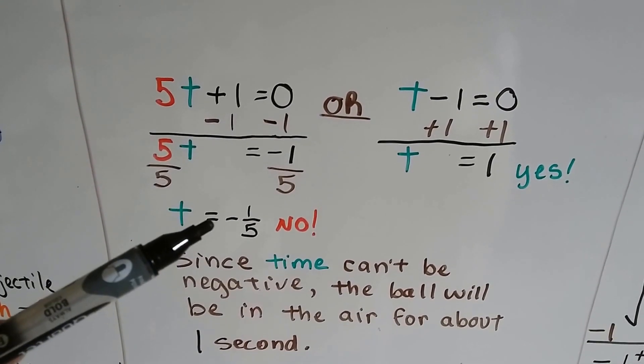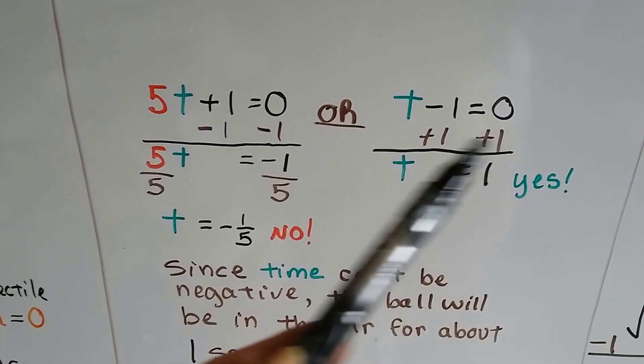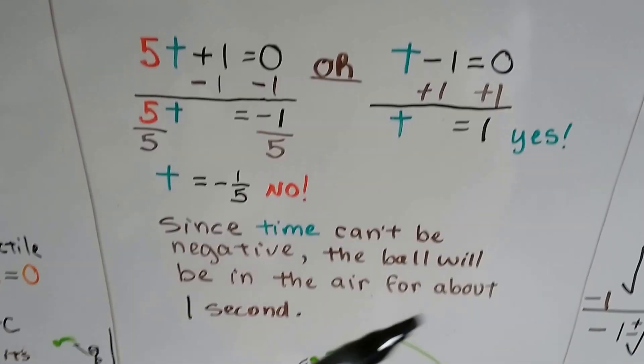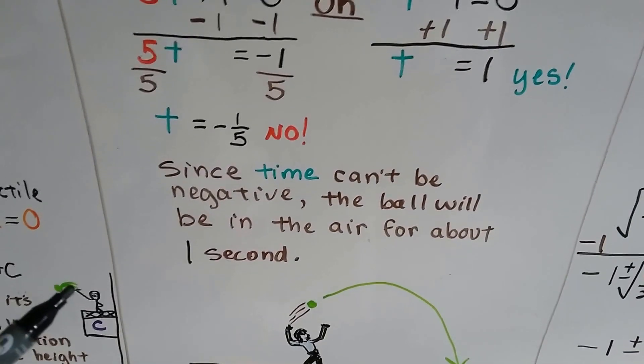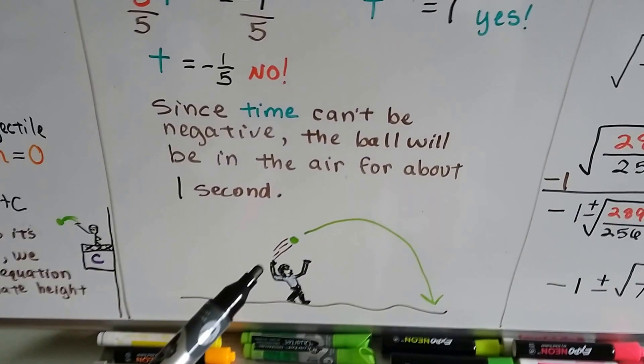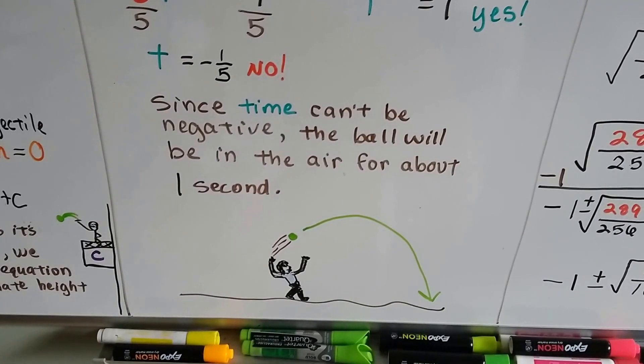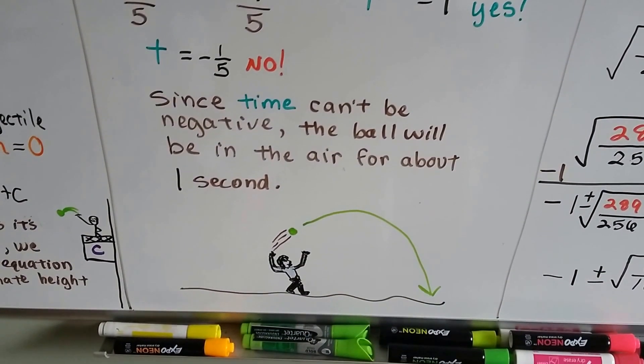So that's not going to work. It can't be negative 1 fifth. On this side, we add 1 to each side to isolate the t and we get a 1. Yeah, since time can't be a negative, the ball will be in the air for about 1 second. So when she throws it from a meter high, it's only going to be in the air for about 1 second.